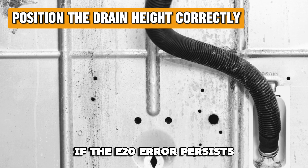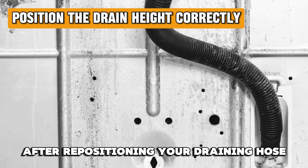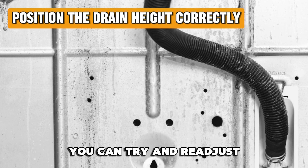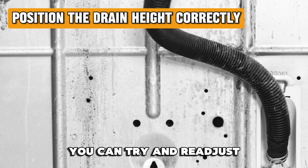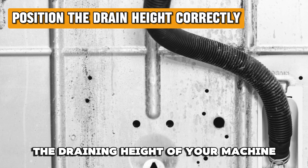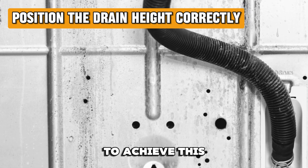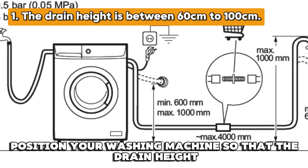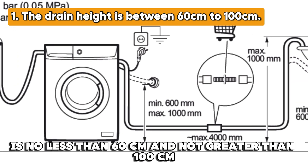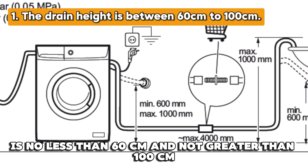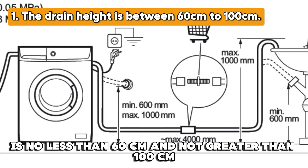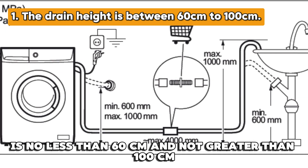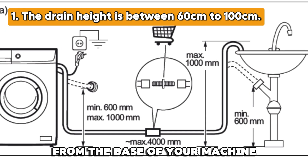Position the drain height correctly. If the E-20 error persists after repositioning your draining hose, you can try and readjust the draining height of your machine. To achieve this, position your washing machine so that the drain height is no less than 60 centimeters and not greater than 100 centimeters from the base of your machine.